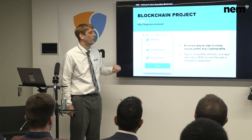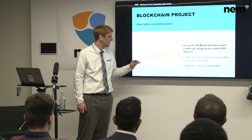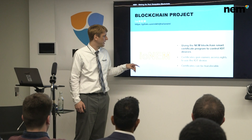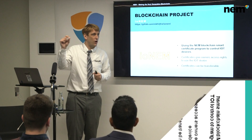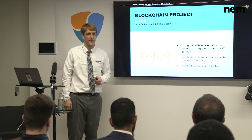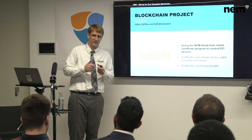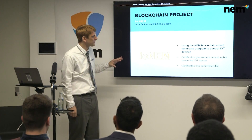Building on that, the same developer who made NIM ID also built IONIM. This is very interesting because it takes the Apostle certificate I just mentioned, and each IoT device has a certificate. Only the owner of the certificate on the blockchain is able to operate the IoT device. So if I own the certificate for my light bulb, then only I can turn the light bulb on and off through the NIM blockchain technology and protocol.